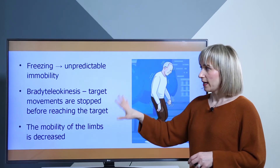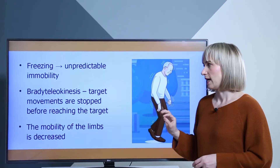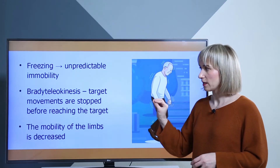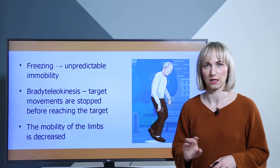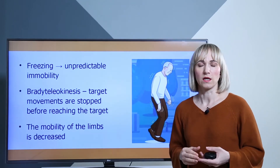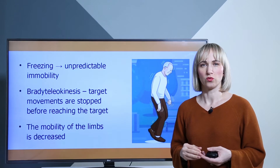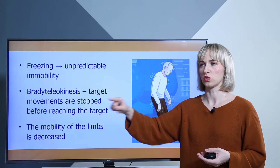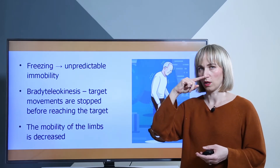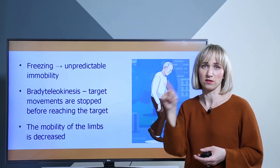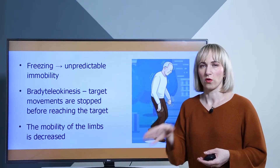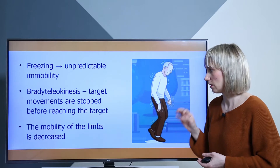Then we have brady-teleokinesis, a type of symptom which means that target movements are stopped before reaching the target. The typical way of testing it is the finger-nose test — you can see that the patient starts doing it and then stops, freezes, and doesn't go at all to the intended target. So the target movement is stopped before reaching the intended target.